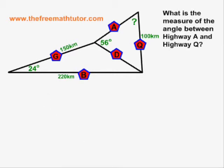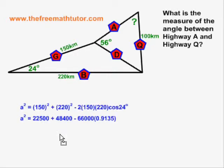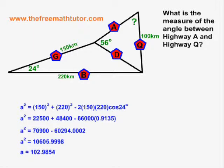The cosine-law calculations will look like this. The result is that the measure of Highway D is 102.9854 kilometers, if we have rounded off to four decimal places.